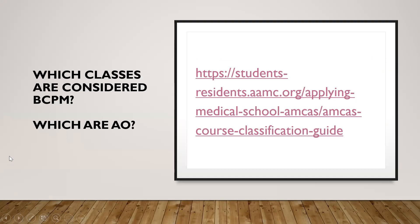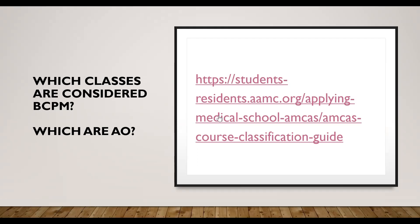A lot of times questions come up about what classes are considered biology, chemistry, physics, and math versus all other subjects. The AAMC has a really great resource that very clearly represents which classes go under which category — which are considered biology, chemistry, physics, math, and which are considered all other subjects. For instance, students might hope that economics counts as math, but it is clearly stated here that econ classes are considered all other subjects.